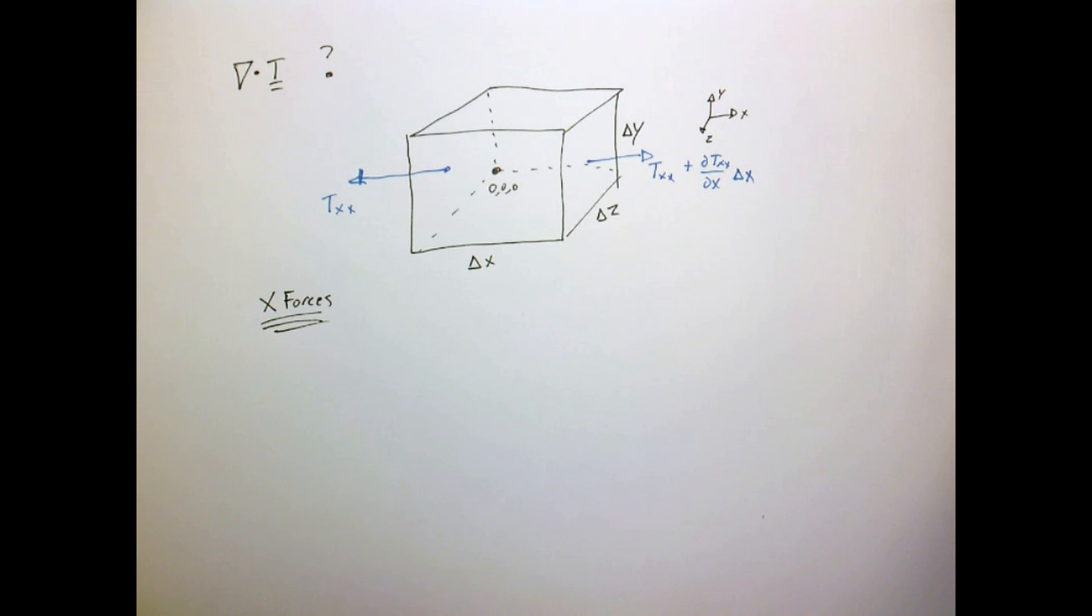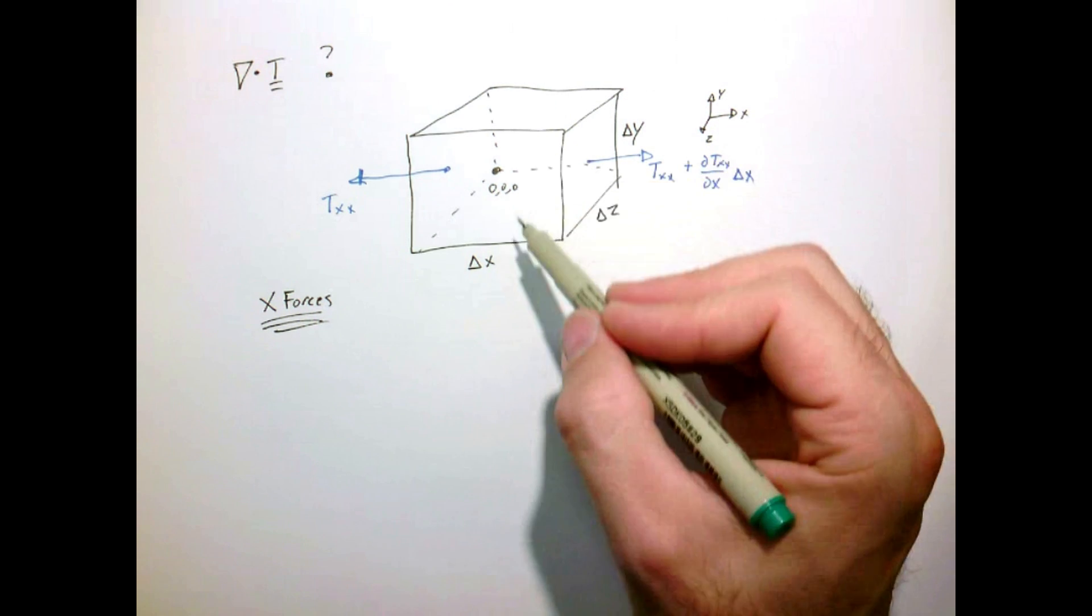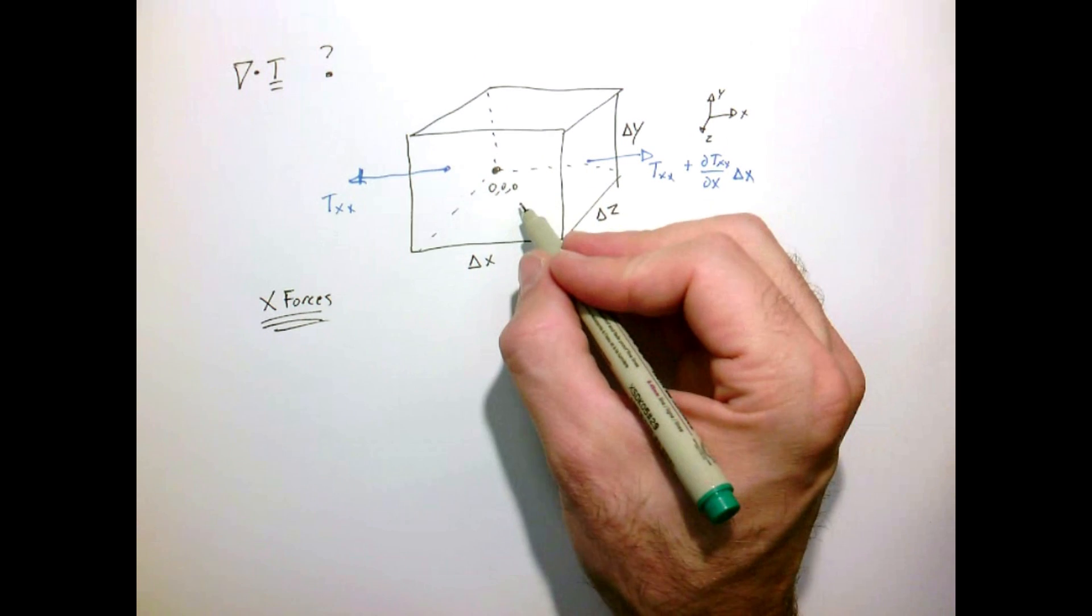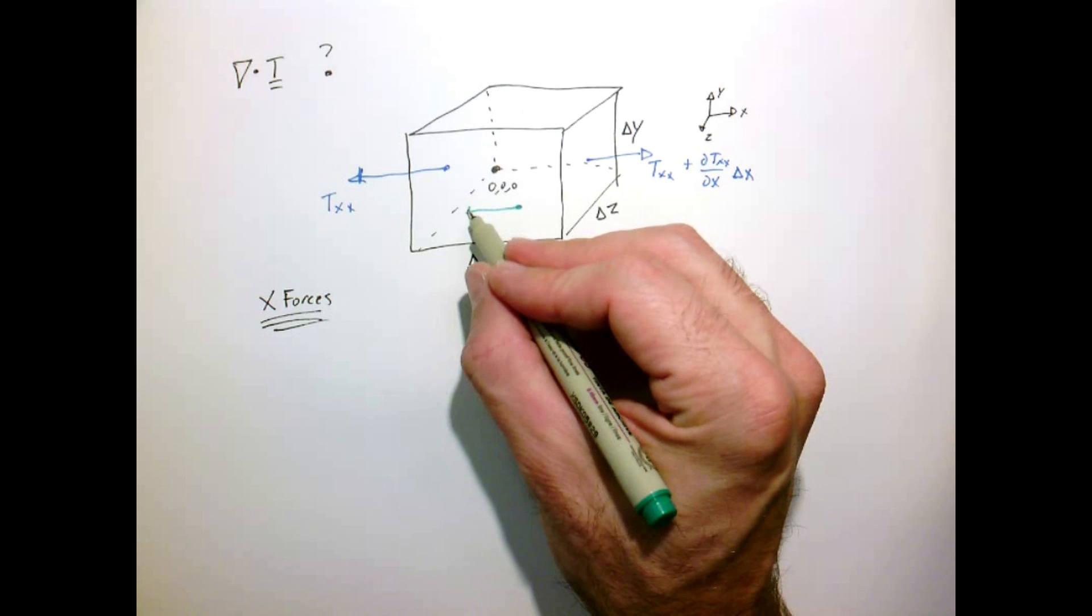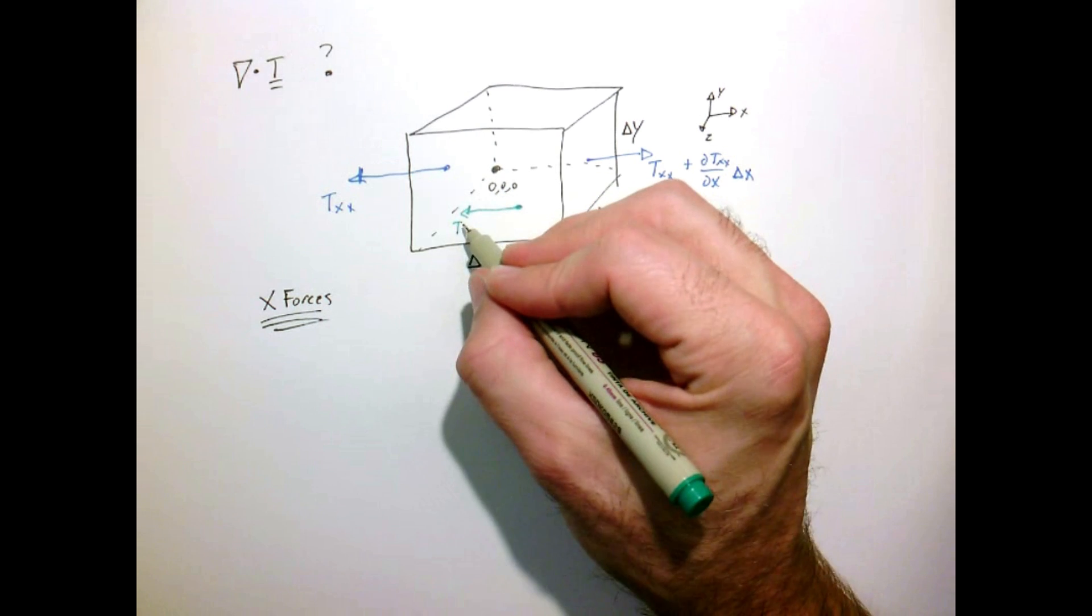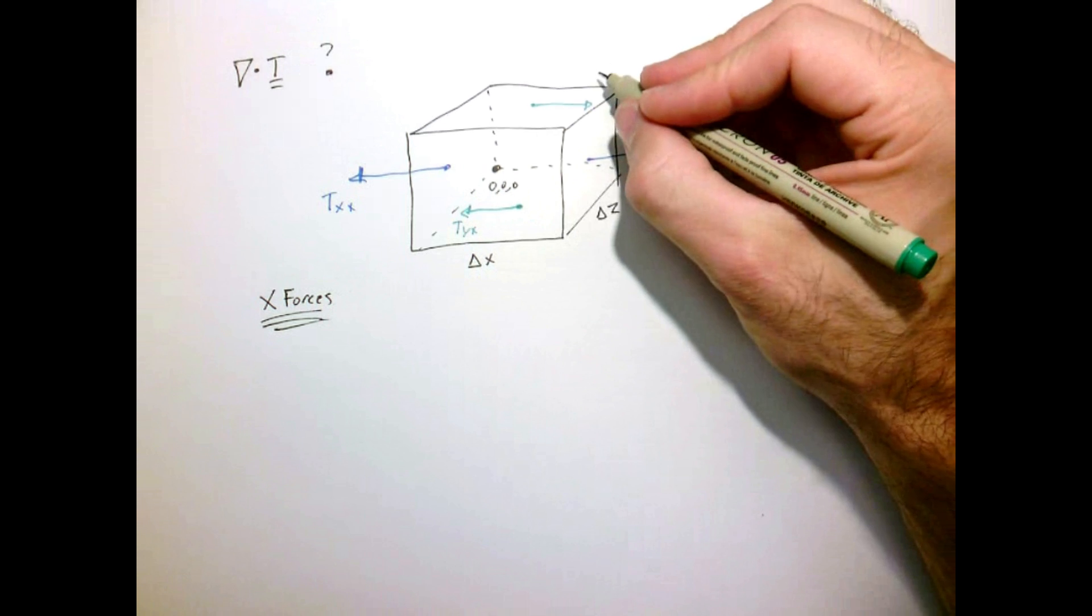Now we're only doing x-forces only, so I won't draw the others, just so this diagram doesn't get cluttered. Now let's do the forces acting on the two faces that have normal directions in the y. So we'll start at the bottom. That one will be pointing backwards. That is τ_xy.